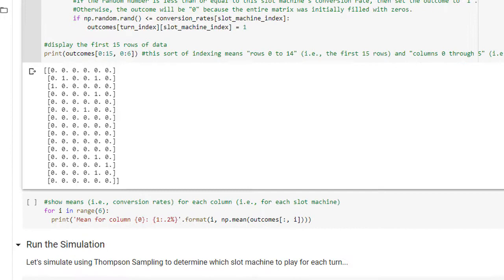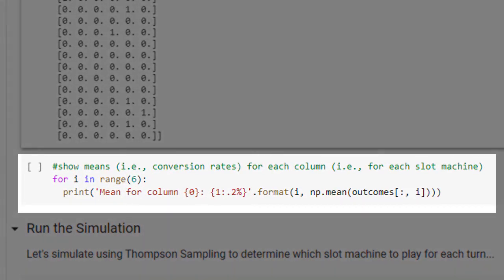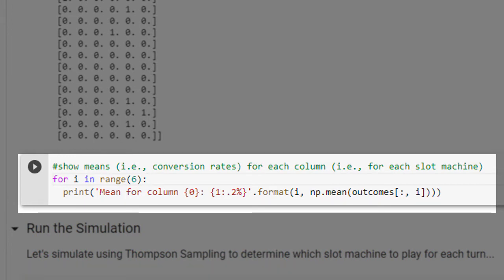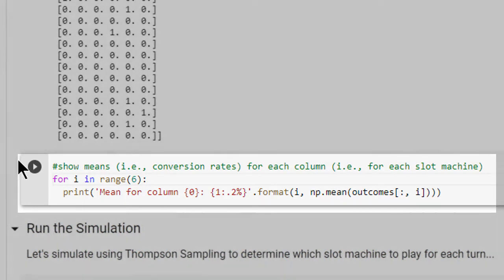The next code cell simply displays the means for each column in the dataset. These are the true conversion rates that we can expect for each slot machine in our simulation. Let's run the cell.